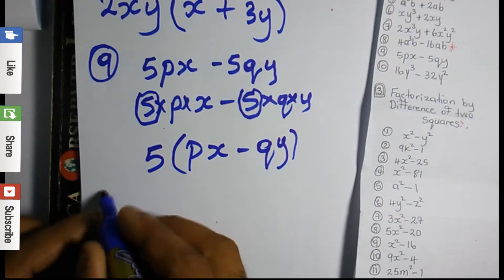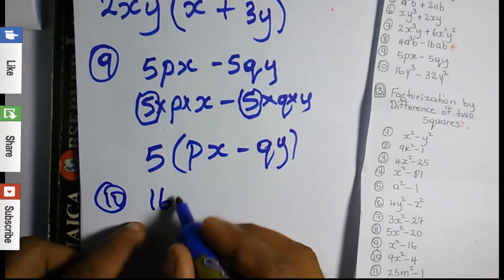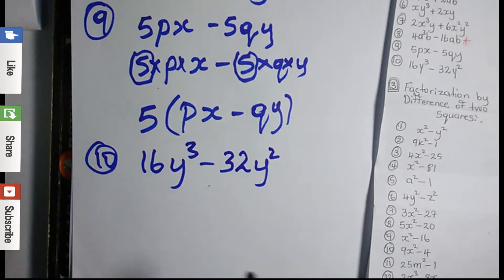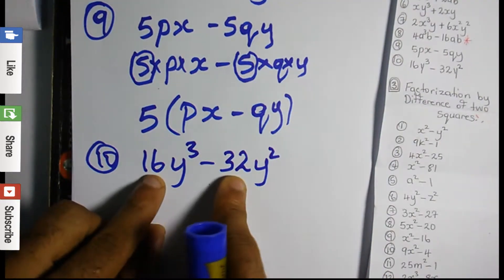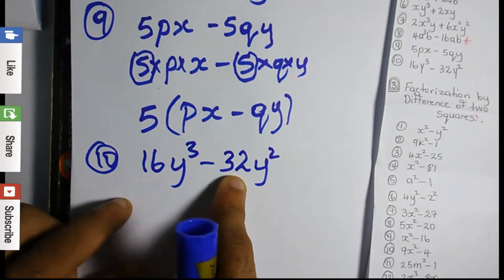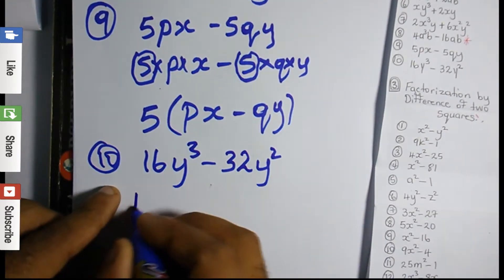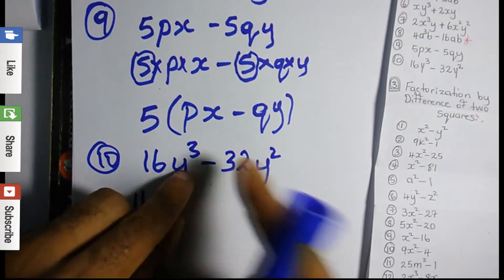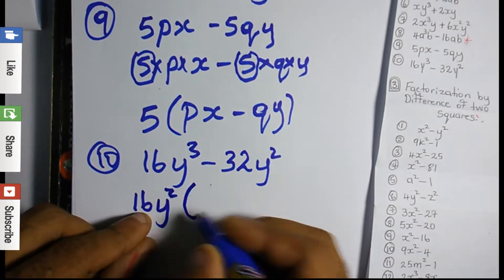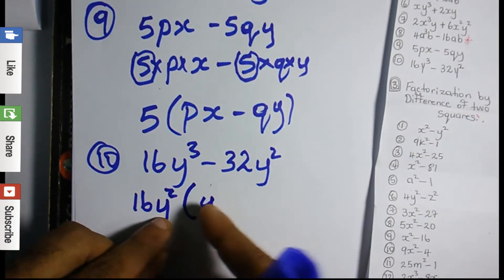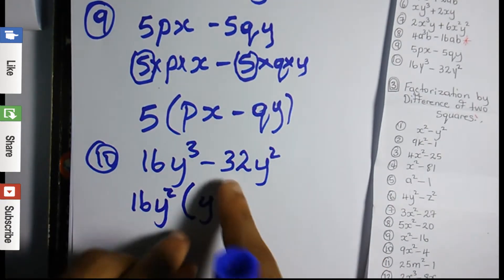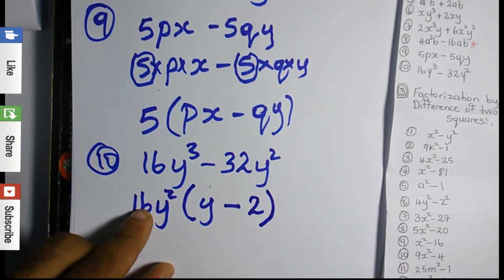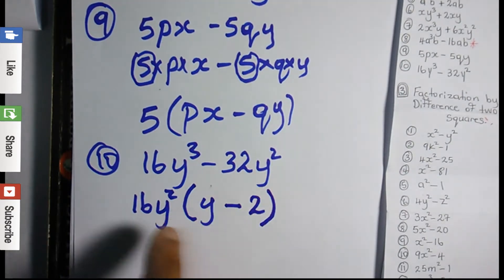Question 10: we have 16y³ - 32y². Noting that 2 times 16 gives us 32, so 16 is common. With the y terms, y squared can divide into y cubed once with y remaining, so y squared is also common. Factor out 16y²: open a bracket, what's left on the first side is y, and 16 times 2 is 32 so the second term gives 2. The answer is 16y²(y - 2).